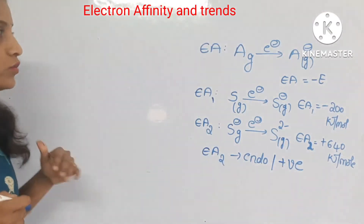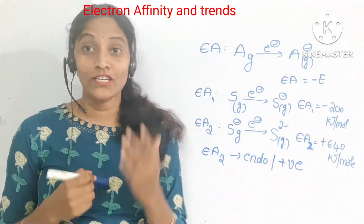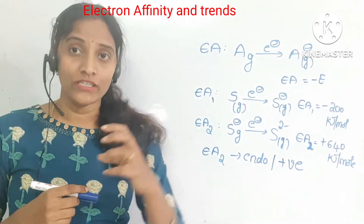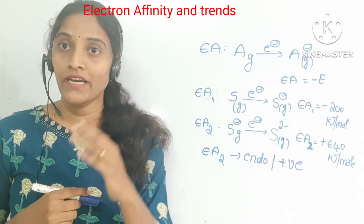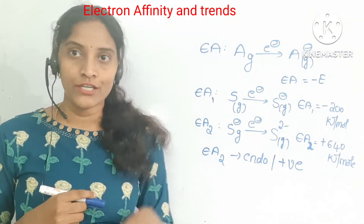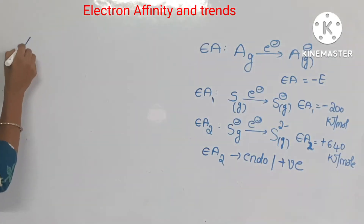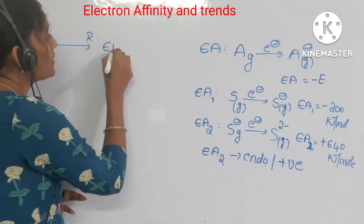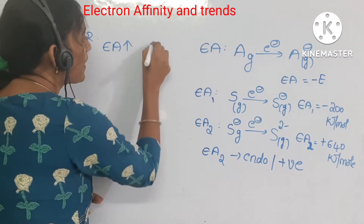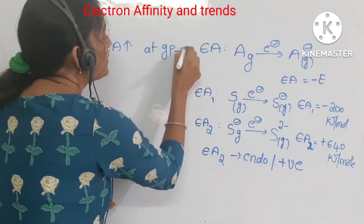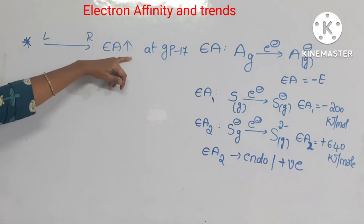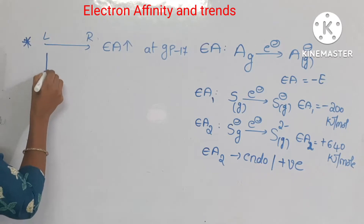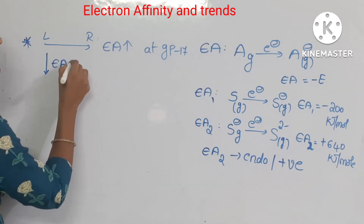Now going to the trends of electron affinity. What are the trends of electron affinity? How does electron affinity change across the period, and how does it change from top to bottom in groups? Across the period, from left to right, electron affinity increases and will be maximum at group 17 elements. From top to bottom in groups, electron affinity decreases.